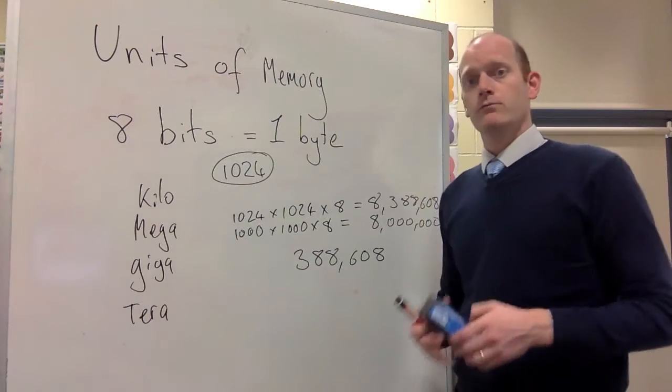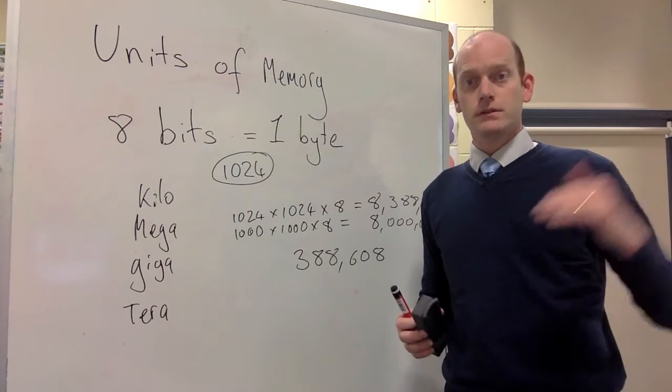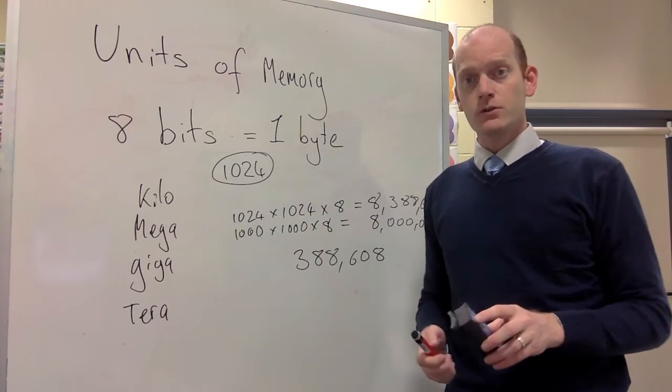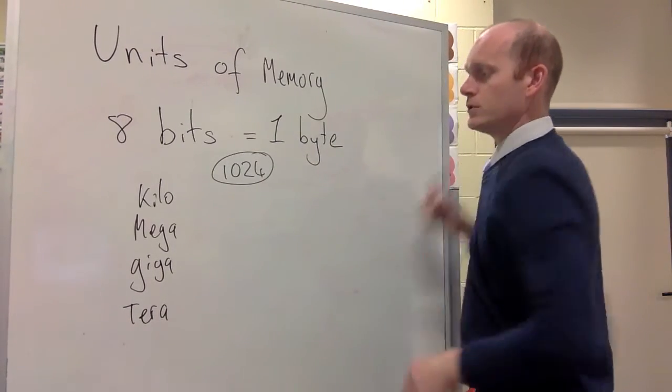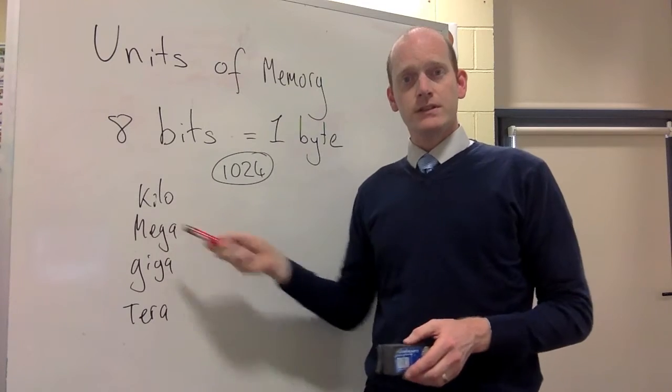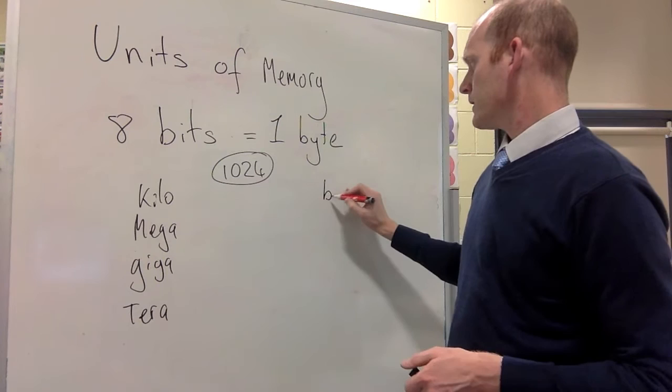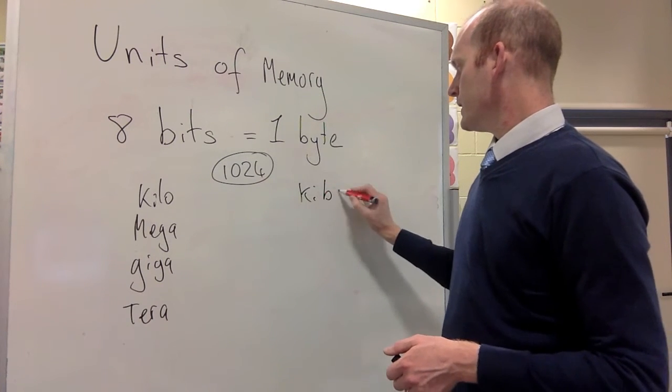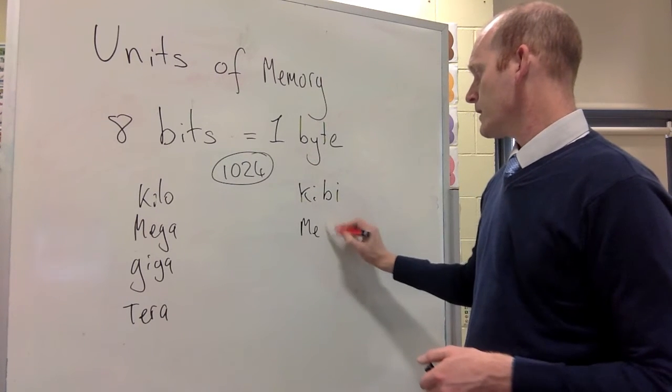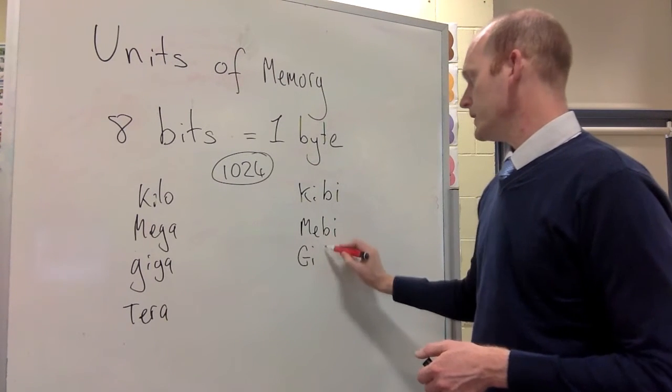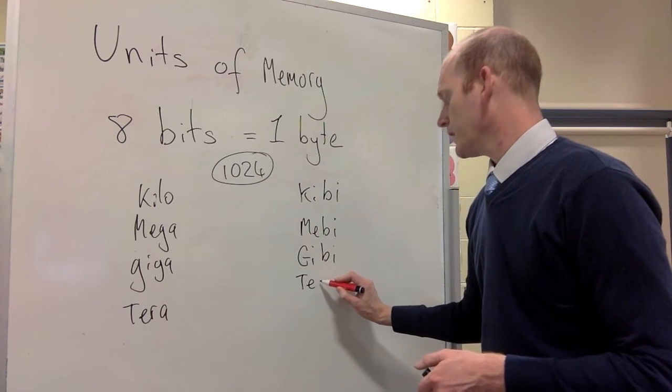So the people that run the standards and set what we measure units, the units we use to measure things by, said we need a solution to distinguish the two. So what they did is they took the first two letters of each of these names and said, but this is referring to binary. So kilo became kibiby. And the next one up would be mebiby. And then the next one would be gibiby. And the next one would be tebiby.